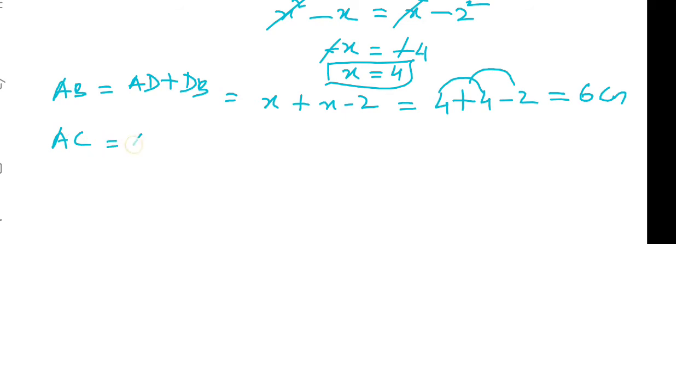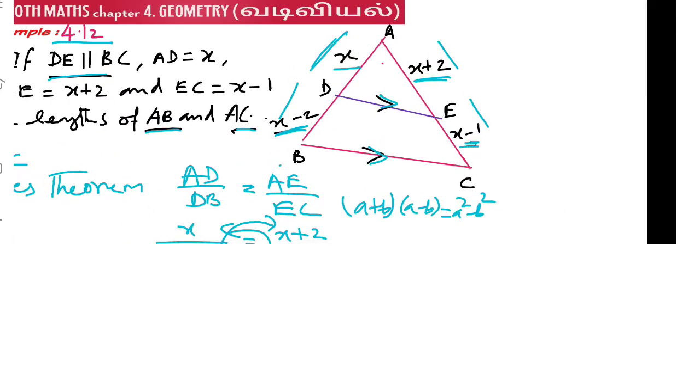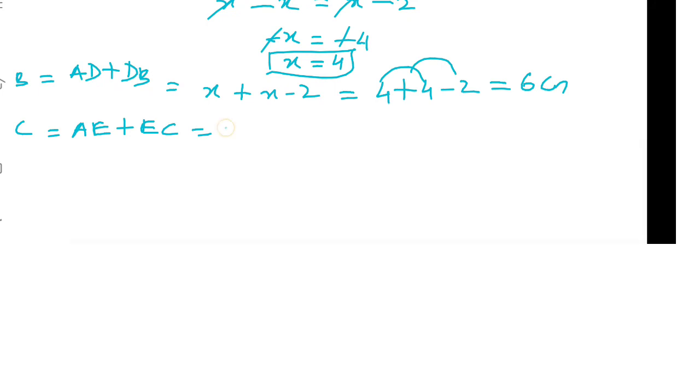AC equal to AE plus EC. AE is x plus 2 and EC is x minus 1. x plus 2 plus x minus 1. Substitute x equals 4, 4 plus 2 is 6, 6 plus 4 is 10, 10 minus 1 is 9 centimeters. Therefore AB equal to 6 centimeters and AC equal to 9 centimeters.